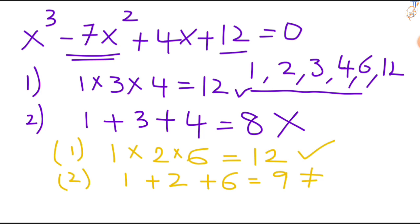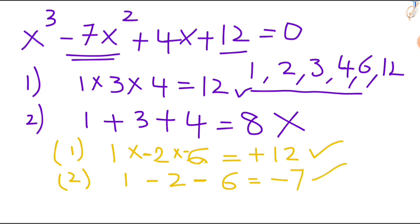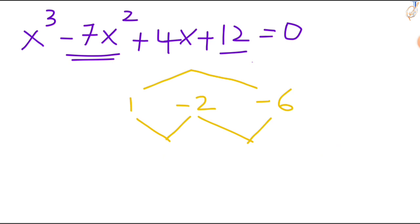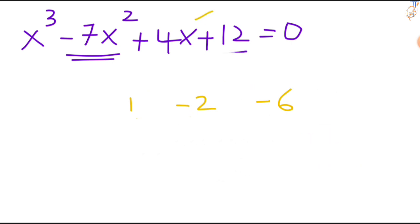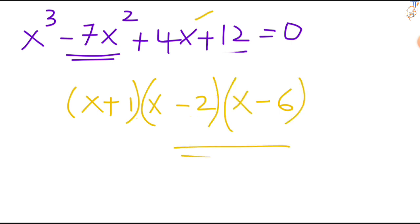So here what you have to do — just change the signs. Now check: minus times minus is plus, so 1 times 2 is 2, 2 times 6 is 12. First condition is satisfied. Now check the second condition: minus 2 minus 6 is minus 8, minus 8 plus 1 is minus 7. So your second condition is also satisfied — it is the same as your x squared coefficient. Now check the third condition: multiply every two factors. 1 times minus 2 is minus 2, minus 2 times minus 6 is plus 12, 1 times minus 6 is minus 6. After adding: minus 6 minus 2 plus 12 gives 4 — same as your x coefficient. So your factors are x plus 1, x minus 2 and x minus 6.